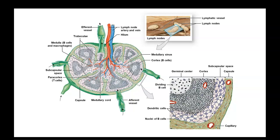The lymph goes forward but cannot go backwards. These vessels don't have the same muscular structure found in arteries, so they need valves like veins have in order to keep fluids flowing in one direction. Once it flows out of this lymph node, it goes through the efferent vessel and from there enters back into the venous system.